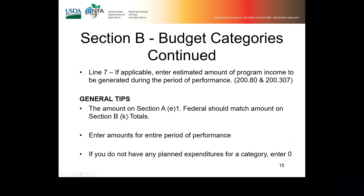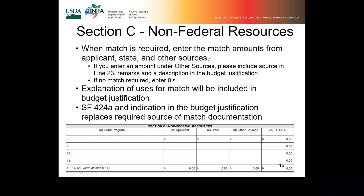A few general tips. The amount on Section A, E1 (federal) should match the amount on Section B, K (totals). So on that first page where you indicate the federal amount from Appendix A, that should match the second page totals of all of the categories — because only the federal amount goes in those category slots. Make sure to enter the amounts for the entire period of performance, and if you don't have any planned expenditures for a particular category, go ahead and enter a zero.